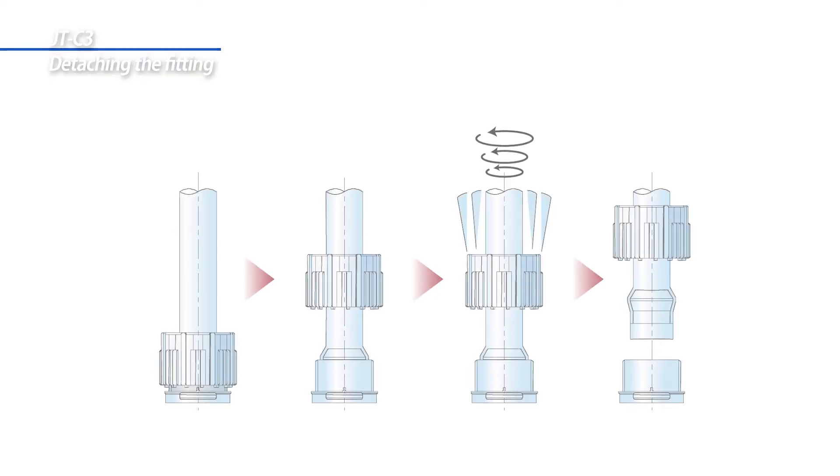To disassemble the fitting, first fully detach the union nut from the fitting. Turn the tube in a circular motion until it can be pulled out of the fitting.